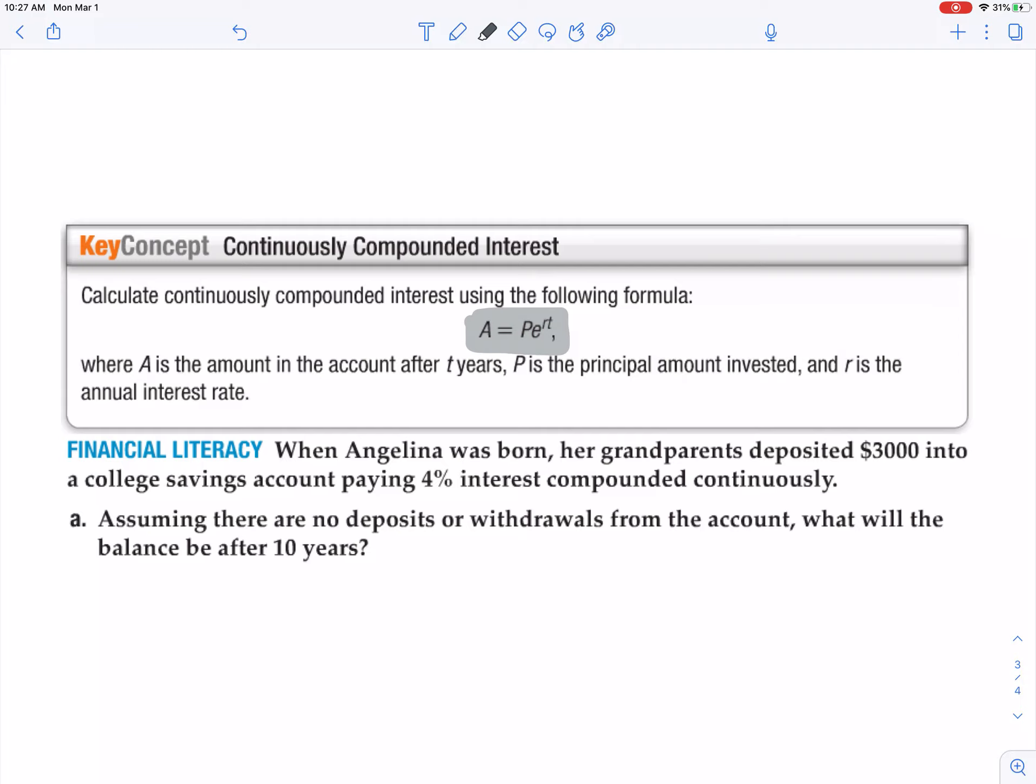So I plug into there. We have $3,000 deposited into an account. I'm just going to write that with the pen. And then e, of course, is the natural base that we learned yesterday. So I'm just going to put an e there.